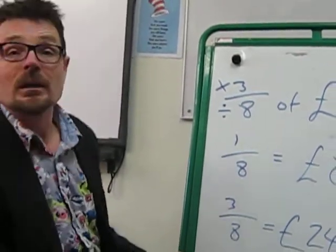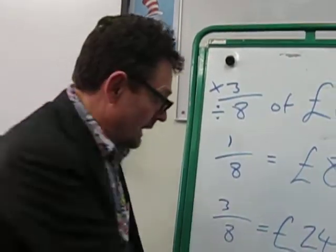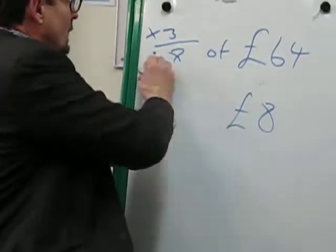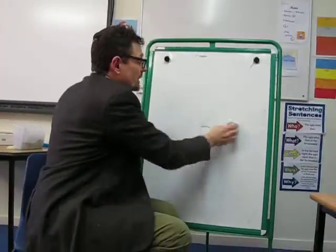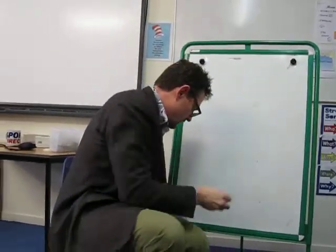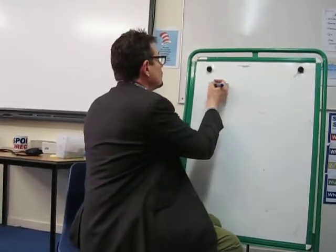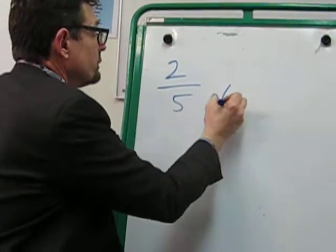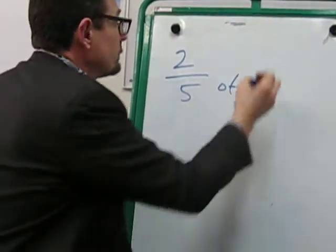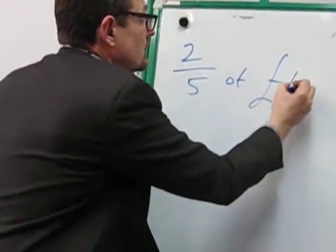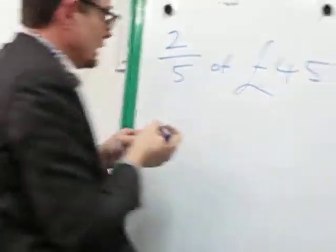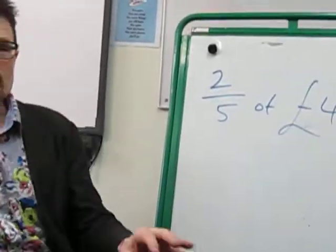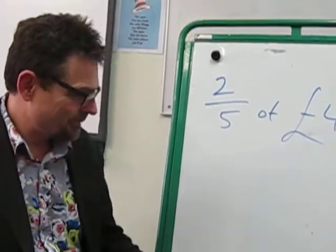I'm now going to give you one of these to do at home. You can pause your YouTube video and have a go at it and see whether you can get it right. So my challenge to you is to find 2 fifths of 45 pounds. Remember: you're dividing by the denominator and multiplying by the numerator.